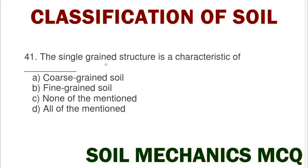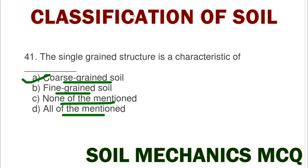Next question: the single grain structure is characteristic of option A coarse grain soil, option B fine grain soil, option C none of mentioned, option D all of mentioned. The correct answer is option A coarse grain soil.